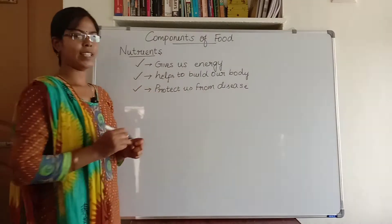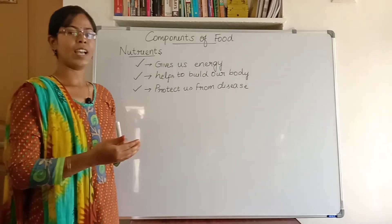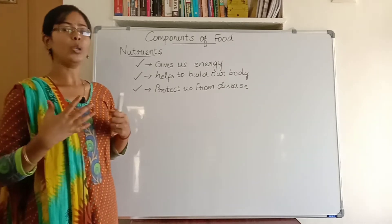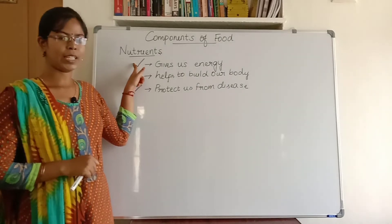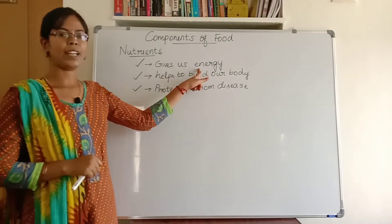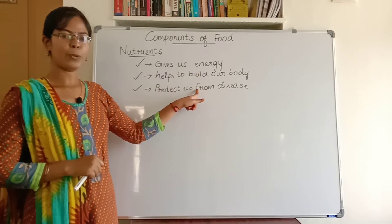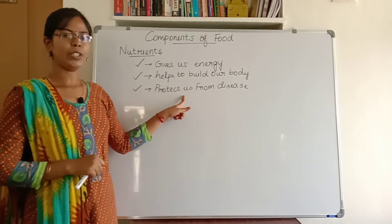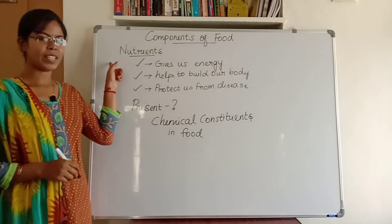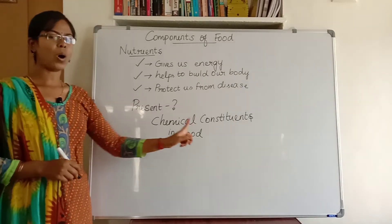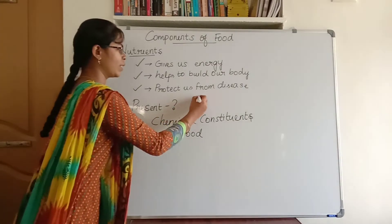Nutrients protect us from disease. Nutrients help to build a resistance to disease, otherwise we may get a lot of diseases. Nutrients are not eaten directly — they are present as chemical constituents in food, and these chemical constituents are in six major forms.